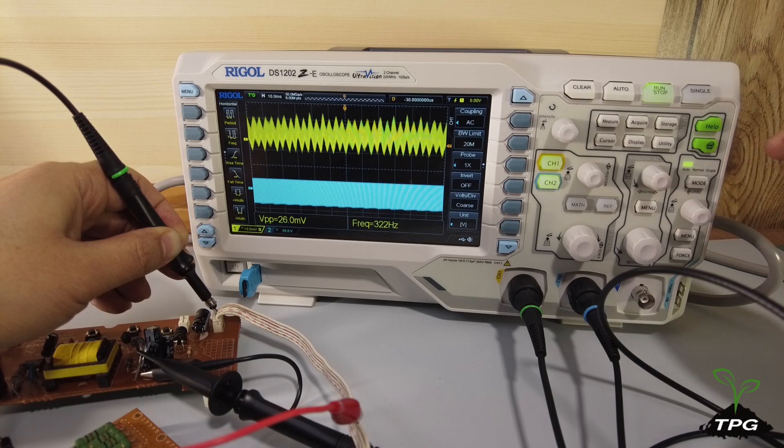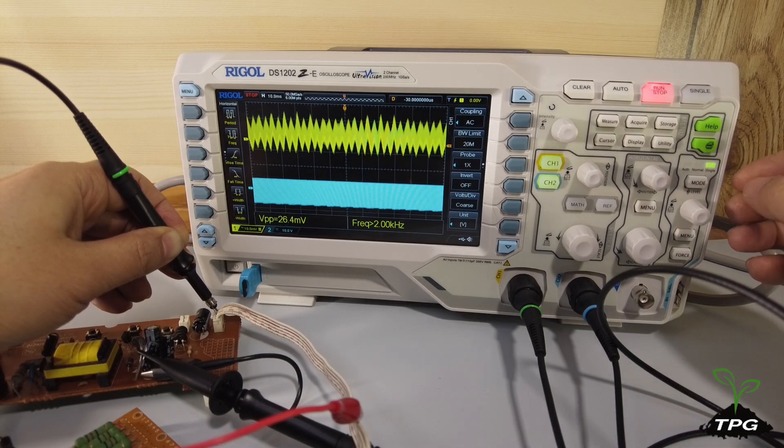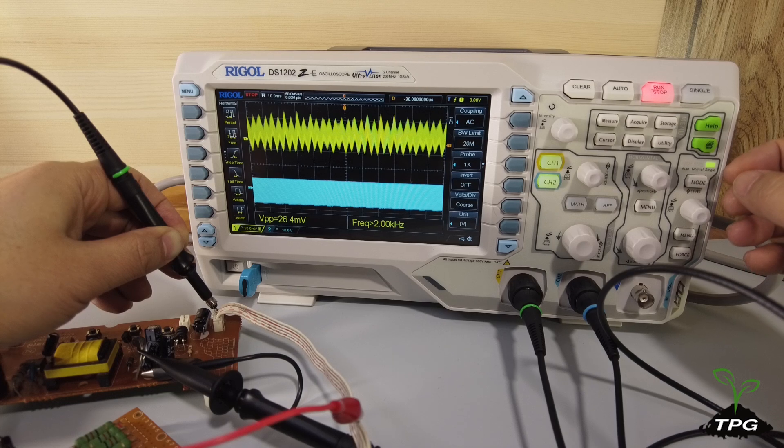The sum of all ripple voltages is approximately 26 mV, which accounts for about 0.5% of the 5V output voltage of the SMPS.